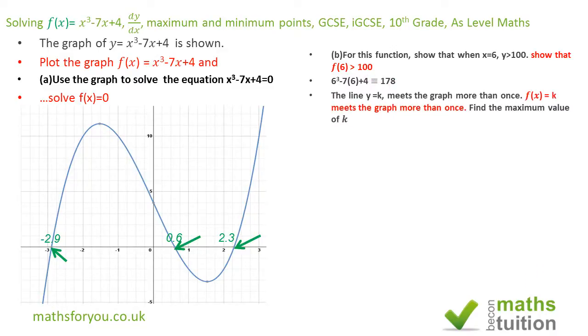All right next section, it says the line y is equal to k meets the graph more than once. Okay, find the maximum value. For IGCSE it might just say f(x) equal to k meets the graph more than once. Right now because you've got a grid line here for GCSE you might just read this point there so that'll give you the maximum point there and this is 5, 6, 7, 8, 9, 10, 11 so just above 11 so 11.1 there is the answer.